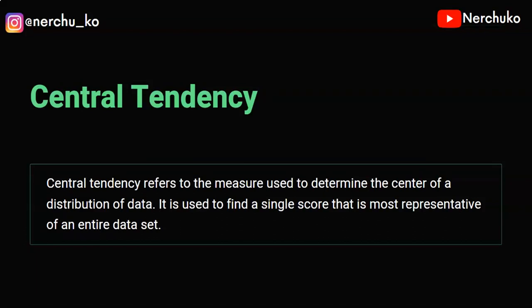Central Tendency refers to the measure used to determine the center of a distribution of data. It is used to find a single score that is most representative of an entire data set. So, if we have Mean, Median, and Mode, then we will use the data distribution center value. That is basically the Central Tendency definition.